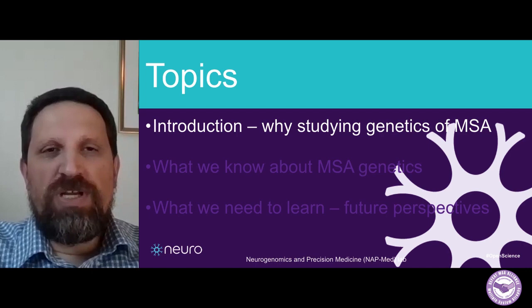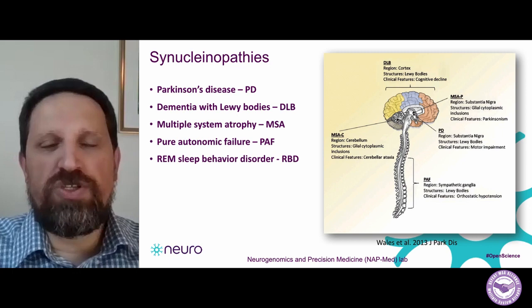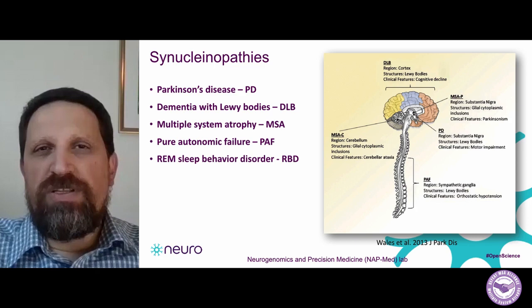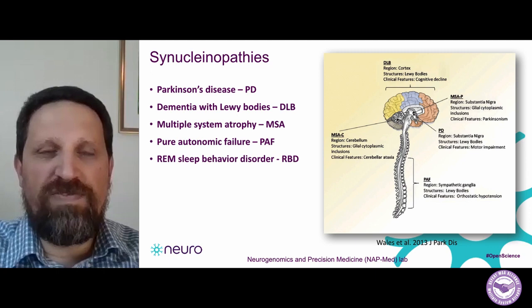So let's start with the introduction. Why are we studying the genetics of MSA? Why is it important? Just to give a little bit of background — I'm sure most of you know it — synucleinopathies is a group of diseases in which there is an accumulation in different regions of the brain of a protein called alpha-synuclein.